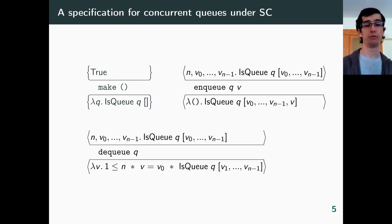Fine! With logical atomicity, let's transcend our previous spec for concurrent uses. The spec of make does not change because we do not need it to be atomic. For enqueue and dequeue, we do the following changes. We replace the regular triples with logical atomic triples. We bind the queue state explicitly in the triples. And that's it!